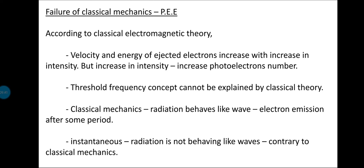Another point classical theory cannot explain is threshold frequency. If the frequency of incident light is not above a certain value — the threshold frequency — no electrons are ejected, regardless of how long the light shines on the metal surface. The concept of why a minimum frequency is required is not explained by classical theory.